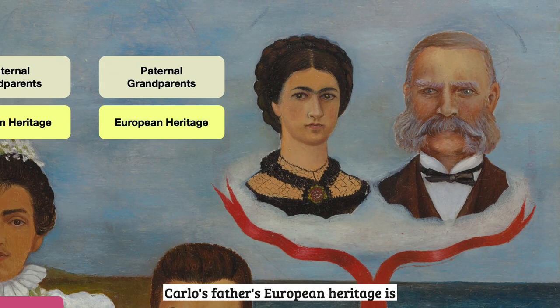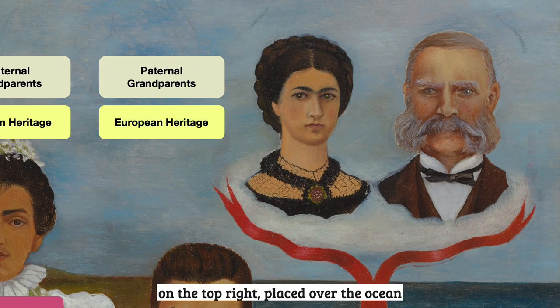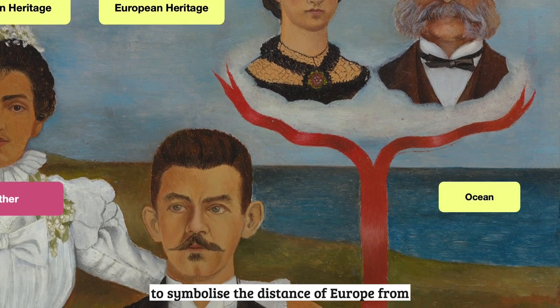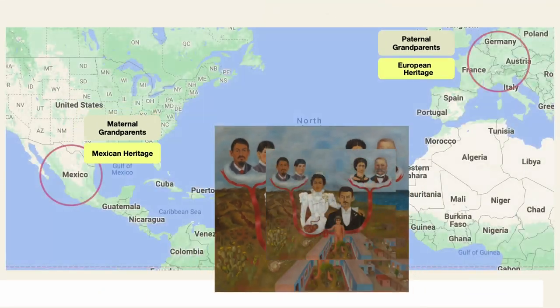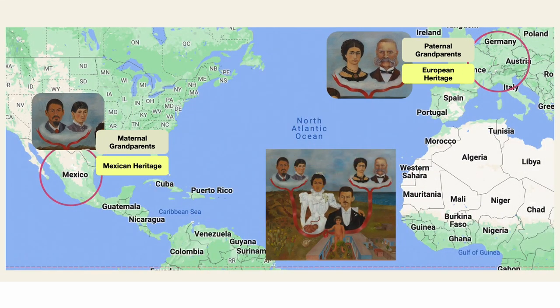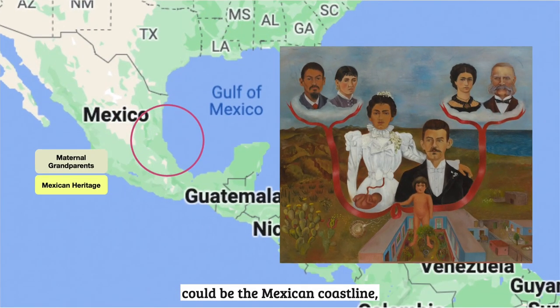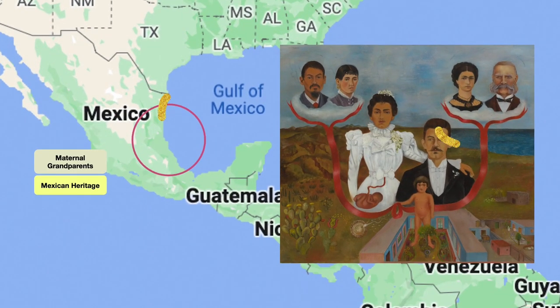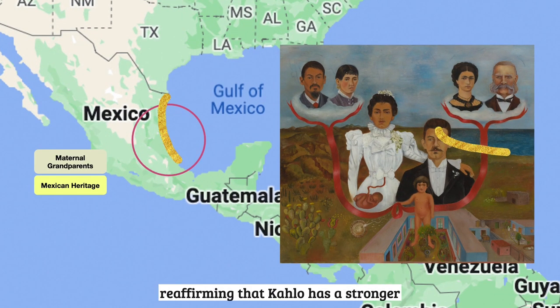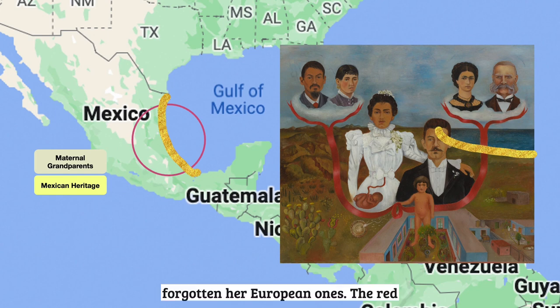Meanwhile, Kahlo's father's European heritage is depicted by the portraits of his grandparents on the top right, placed over the ocean to symbolize the distance of Europe from their home. The coast that separates land and water could be the Mexican coastline, reaffirming that Kahlo has a stronger association to Mexican roots, but has not forgotten her European ones.